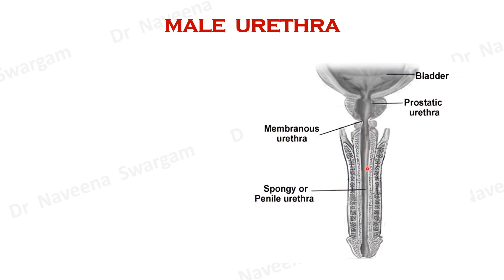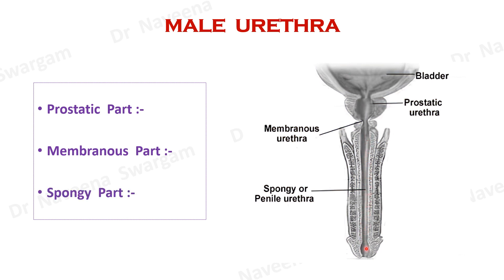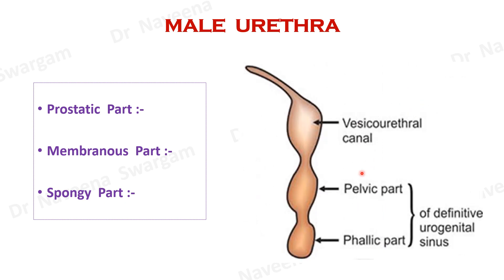Male urethra is divided into three parts: proximal prostatic part surrounded by prostate gland, middle membranous part piercing the perineal membrane, and distal spongy part or penile part of urethra. Most of the male urethra develops from pelvic and phallic parts of definitive urogenital sinus.